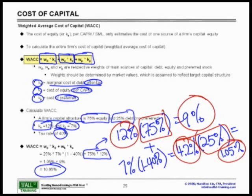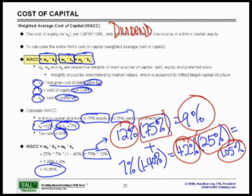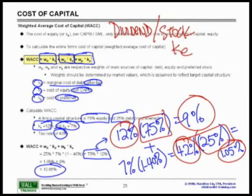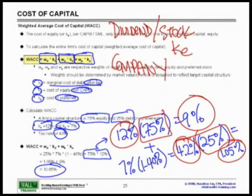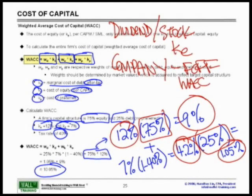One last point on WACC in terms of the bigger picture: don't forget, you must match the discount rate with the actual asset. If you're trying to figure out dividends via the dividend discount model for a stock specifically, you must use the cost of equity. If you're trying to figure out the cost of capital for the entire company using free cash flows to firm, you must use the WACC. Always match the actual discount rate with the actual asset.